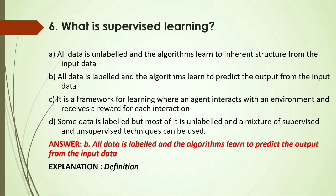MCQ: What is supervised learning? Options: A) All data is unlabeled and the algorithm learns to inherit structure from input data; B) All data is labeled and the algorithm learns to predict output from input data; C) A framework where an agent interacts with environment and receives reward for each interaction; D) Some data is labeled but most is unlabeled and a mixture of supervised and unsupervised techniques can be used. Answer: B, all data is labeled and algorithms learn to predict output from input data.